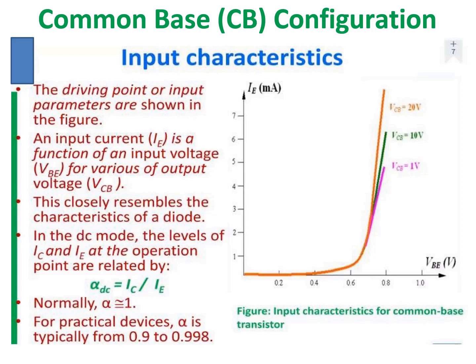Input characteristics is a plot of input current versus input voltage, keeping the output voltage constant. In the common base configuration, input current is IE and input voltage is VBE, while the output voltage is VCB. VCB is kept constant at different levels while the input voltage is varied to observe the resulting current. At each input voltage, the corresponding input current IE is recorded, and IE versus VBE is plotted to give the common base input characteristics.